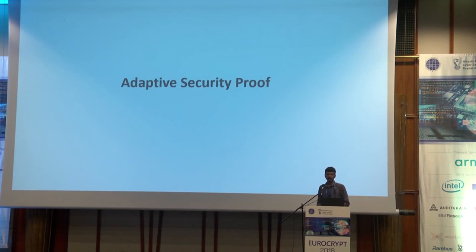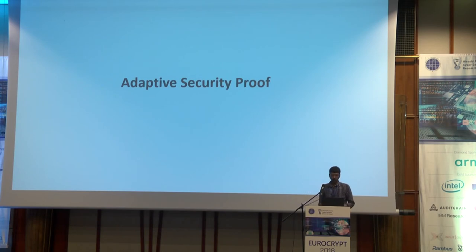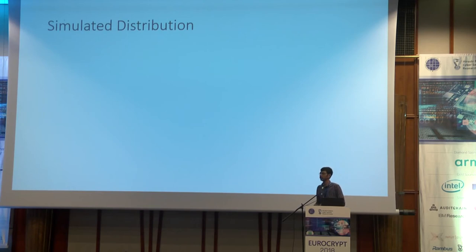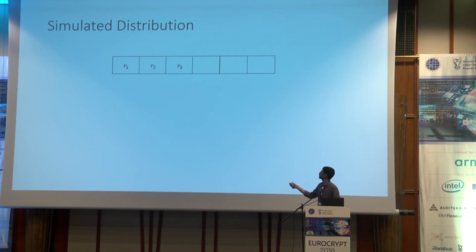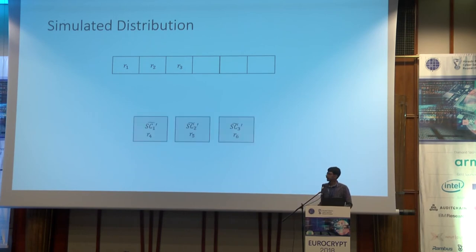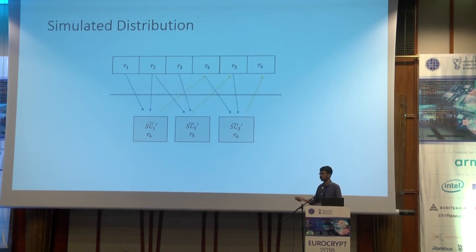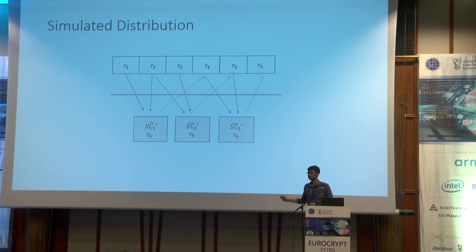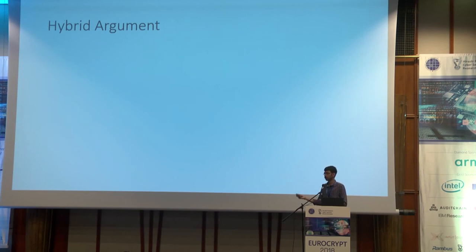In the remaining time I will give a high-level idea of how the adaptive security proof works. We need to prove the real world distribution is indistinguishable from the simulated distribution. The simulated database consists of random junk values and does not contain the input masks. The simulated step circuits are dummy step circuits that read the same locations as the original, do no computation, and write random values.